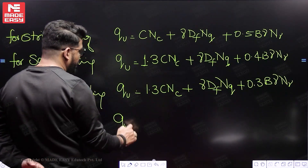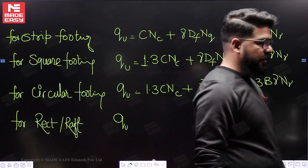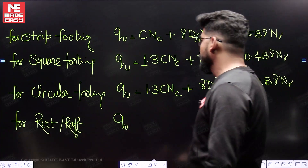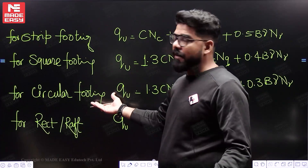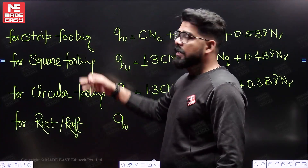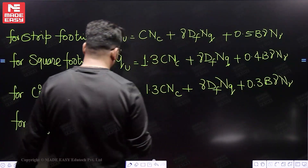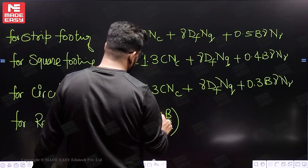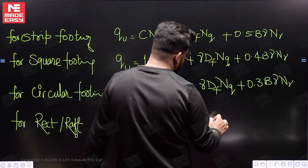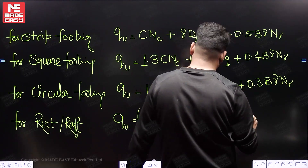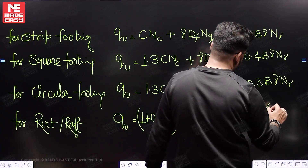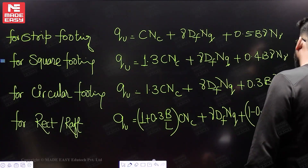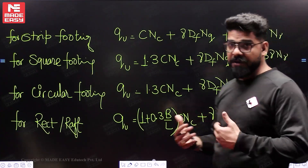For rectangular raft, there is both width B and length L. In circular footing only the diameter is there; in square B equals L; in strip only B is used with L very much greater than B. For rectangular raft, we take both B and L into consideration: QU = (1 + 0.3·B/L)·C·NC + γ·Df·NQ + (1 − 0.2·B/L)·0.5·B·γ·Nγ.